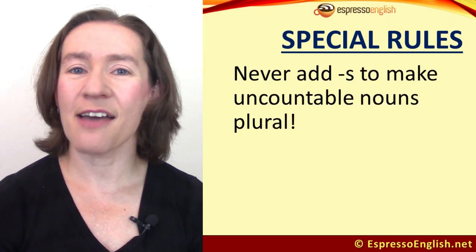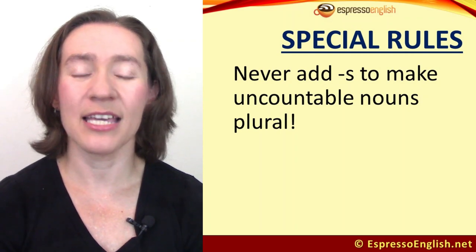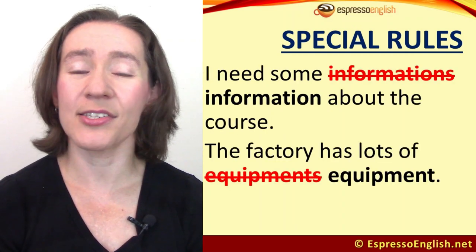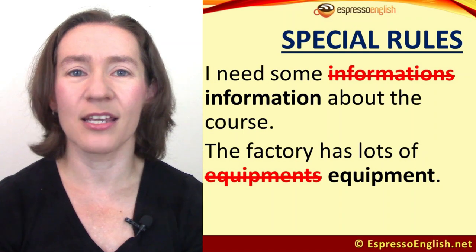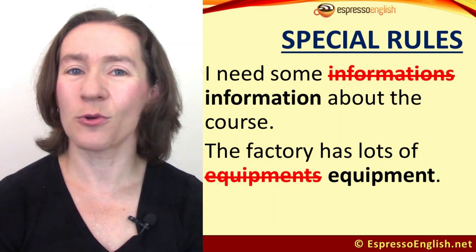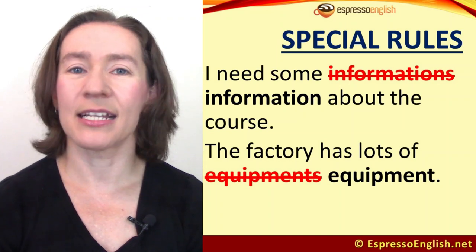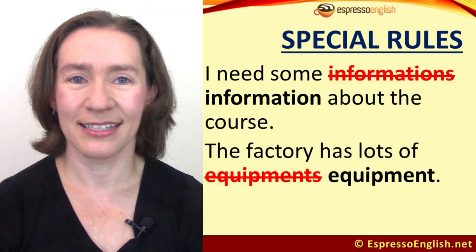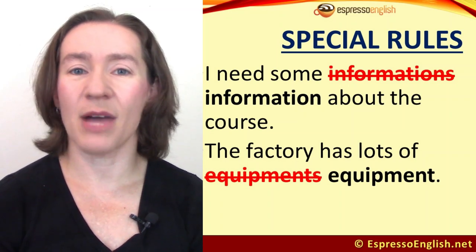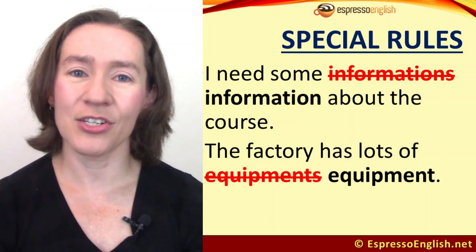The first rule is: never add S to make uncountable nouns plural. Don't say 'I need some informations about the course.' The correct sentence is 'I need some information about the course.' Don't say 'the factory has lots of equipments.' Instead, say 'the factory has lots of equipment.' In your own native language it might be possible, but in English it is not.